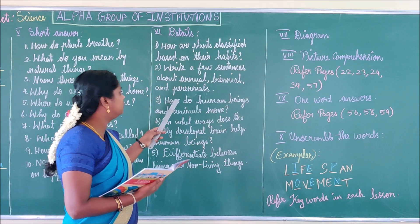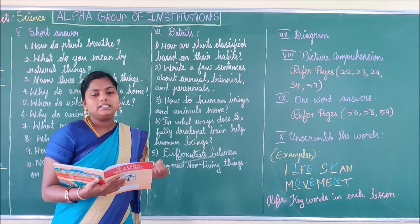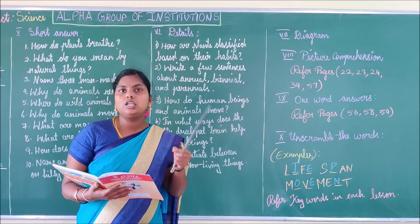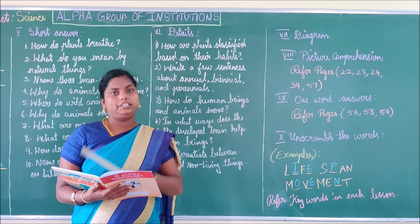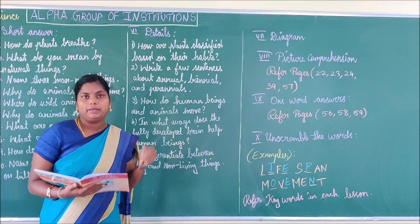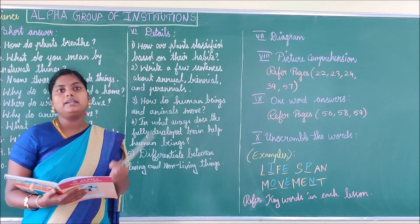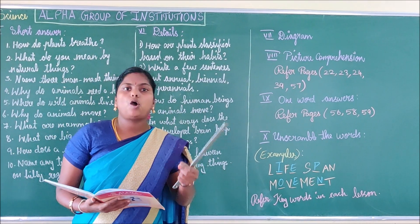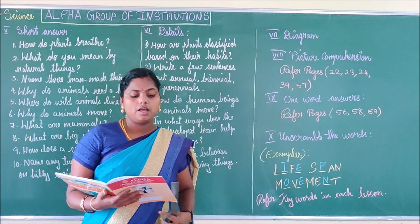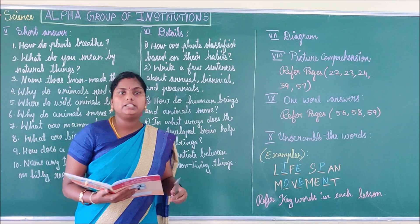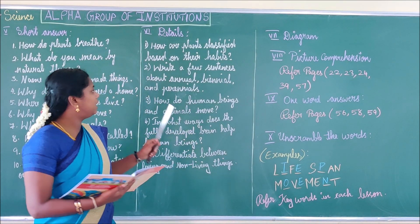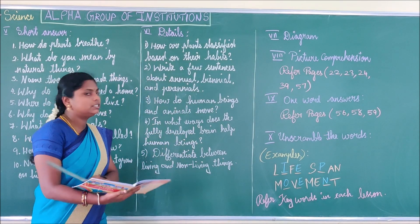Perennials: A perennial is a plant that lives for three or more years. For example, neem tree and coconut tree.